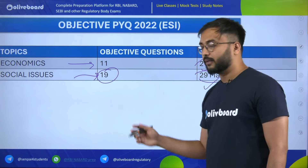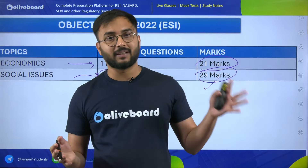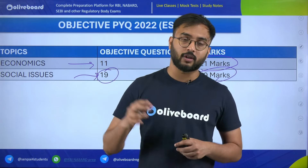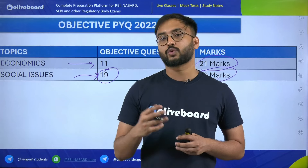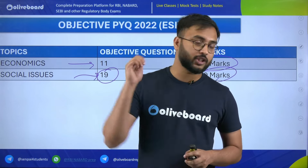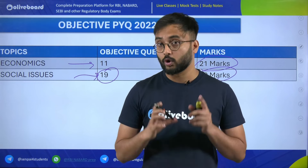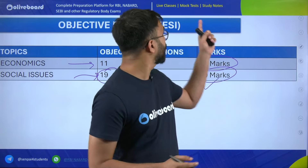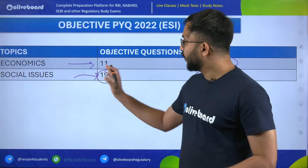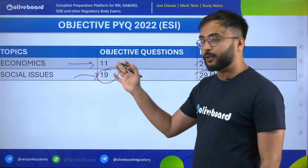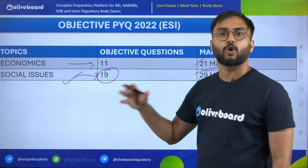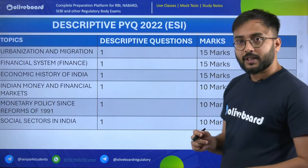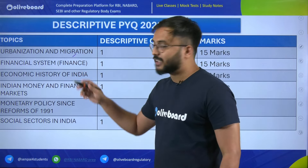For 2023 and 2022, social issues had maximum questions and marks in the objective part. In the descriptive part, topics change each year — it's not fixed that only the same topics repeat. But some do repeat, which I will tell you: urbanization and migration, financial system, economic history of India, Indian monetary and financial markets, monetary policy since reforms of 1991, and social sector in India — these have been repeated for two years straight, with one question each for 15 or 10 marks.